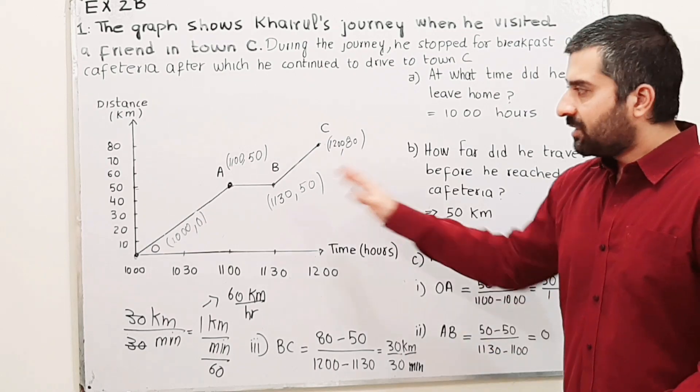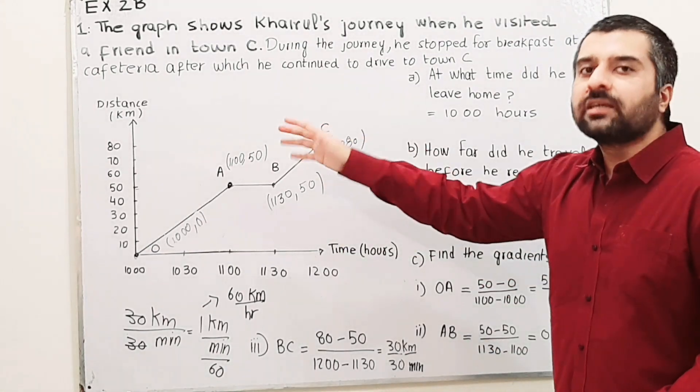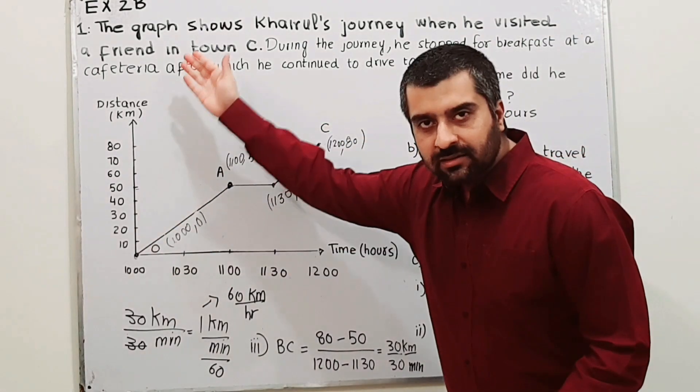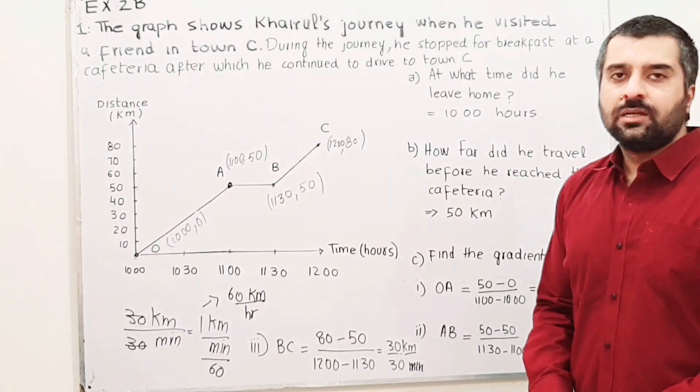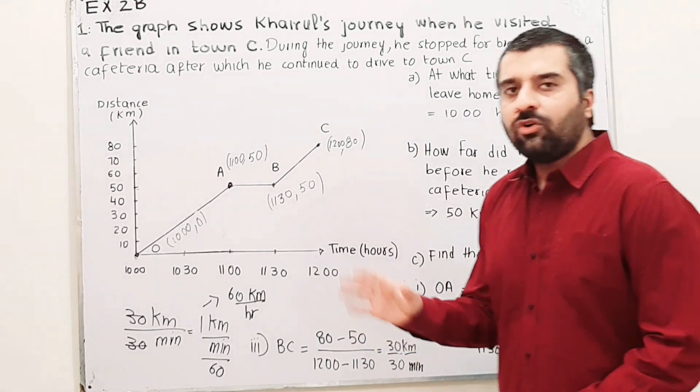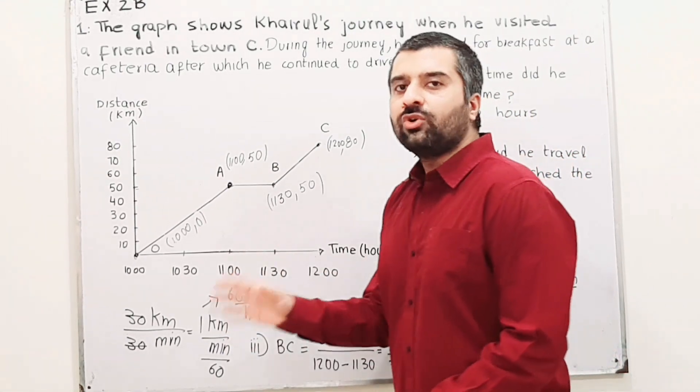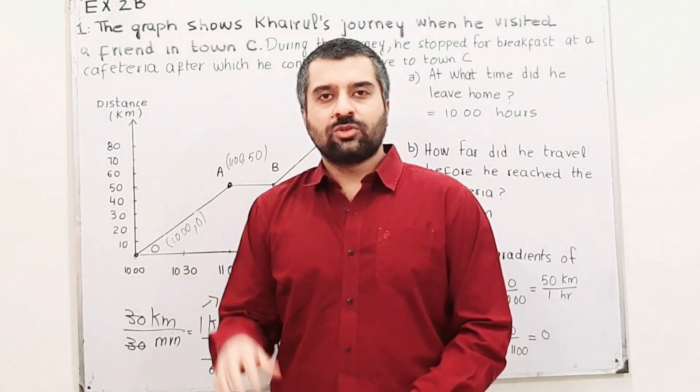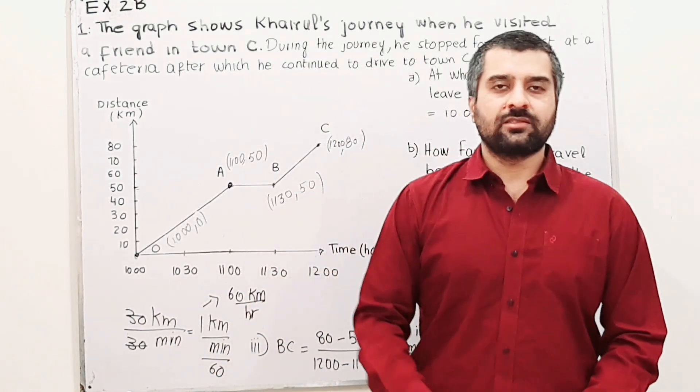The distance time graph is a graph where we have distance on the y-axis and time on the x-axis. How to interpret this graph? Wherever we have a horizontal line, that shows no distance is covered. When no distance is covered, we are at rest.